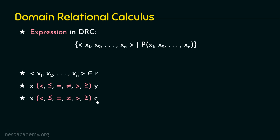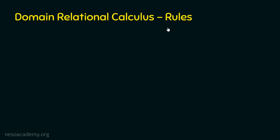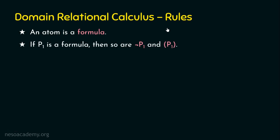Now let's see the rules of domain relational calculus. If you are directly watching this, I recommend watching tuple relational calculus first to understand the basics. The rules are similar. Rule 1: an atom is a formula — for example, s belongs to r, where s is a domain variable. Rule 2: if p1 is a formula, then so are negation of p1 and p1 itself. The only difference from tuple relational calculus is that here we work at the attribute level, not the tuple level.